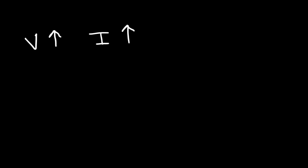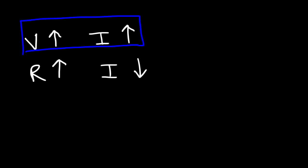You need to know that as the voltage in a circuit increases, the current will increase, provided that the resistance stays the same. If the resistance goes up, the current will go down if the voltage is held constant. So voltage and current are proportional to each other, and resistance and current are inversely related to each other.